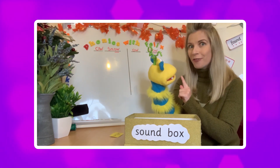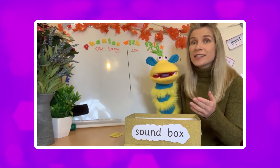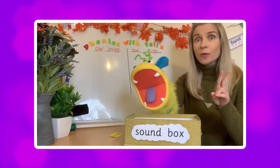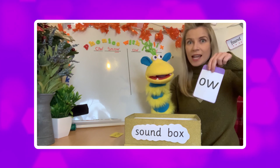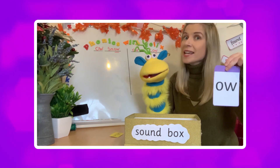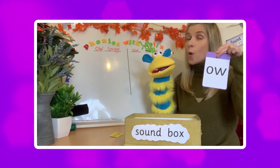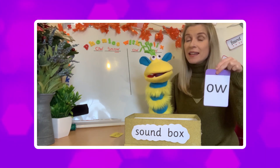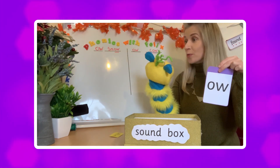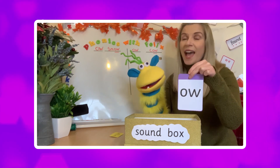Felix, do you remember what a digraph is? Everyone at home, I'm sure you do too. Two letters, one sound. Absolutely — two letters, one sound, or in this case, two letters that make two sounds. So today we have this digraph. The two letter shapes O and W together can make the sound 'O' as in snow, but they can also make the sound 'OW' as in brown cow.